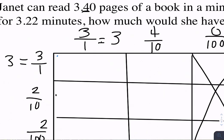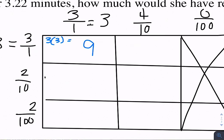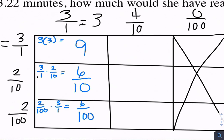Now I can use my multiplication skills to get these answers. In this box, we have 3 times 3, which is 9 wholes. Here we have 3 over 1 times 2 over 10, which gives us 6 tenths. Here we have 2 over 100 times 3 over 1, and I get 6 over 100. Here we have 3 over 1 times 4 over 10, and I get 12 tenths, or 1 and 2 tenths.